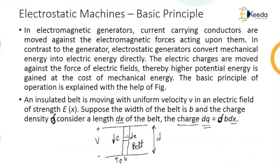Whatever may be the number of charges, that is in terms of charge density multiplied by the width. Those charges are present on the complete width of the belt. And for a distance of DX, the total charges are DQ. So DQ is equal to sigma into B into DX.